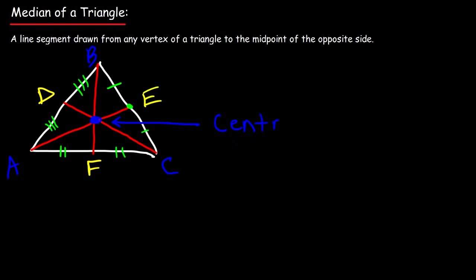The centroid is basically the center of gravity of the object. If you had a triangle made of metal with uniform density and you threw it, the object would spin around the centroid. You can think of it as the center of mass when mass is distributed uniformly throughout the object.